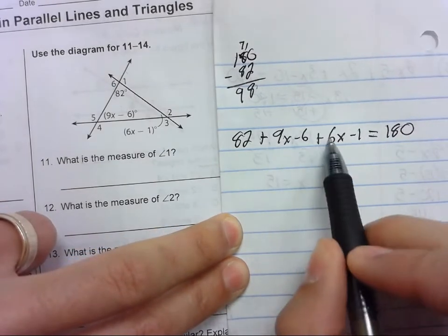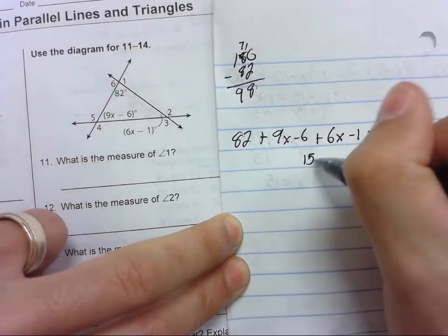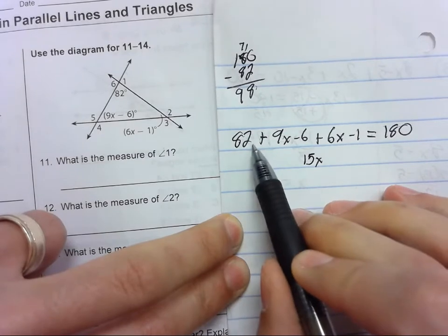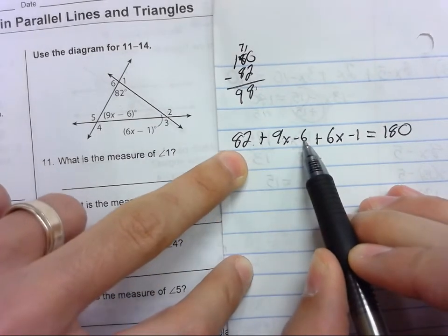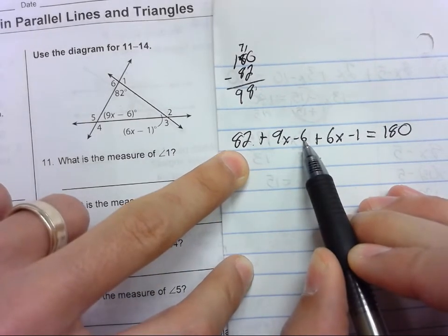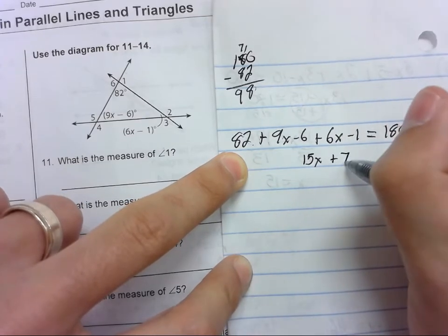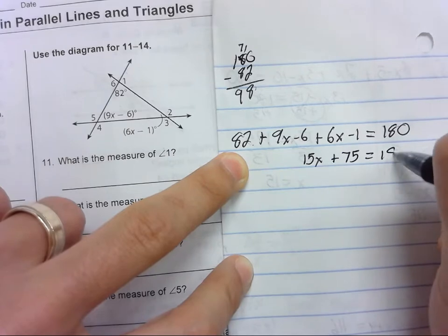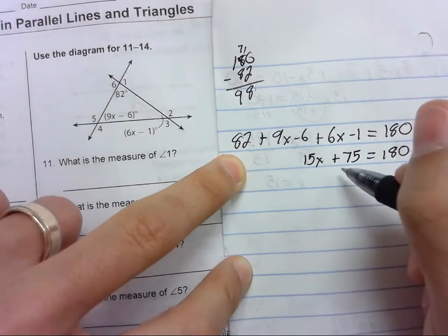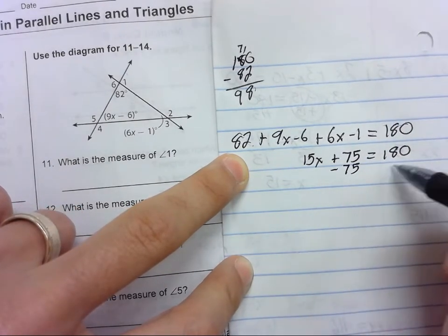So we have 9x plus 6x is 15x. 82 minus 6 is 76, minus 1 is 75. Minus 75 on both sides.